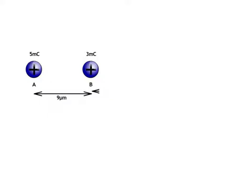By way of example, let's find the electrostatic force between these two particles. Particle A, we would say has a charge of 5 millicoulombs. Particle B, we would say has a charge of 3 millicoulombs, and they are separated by a distance of 9 micrometers.